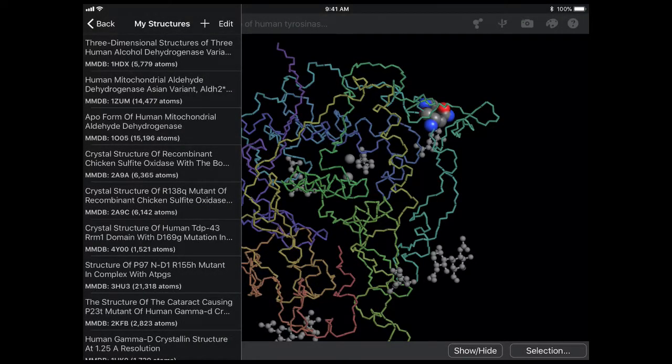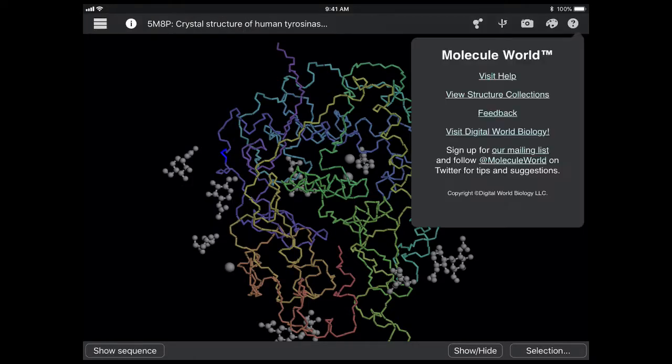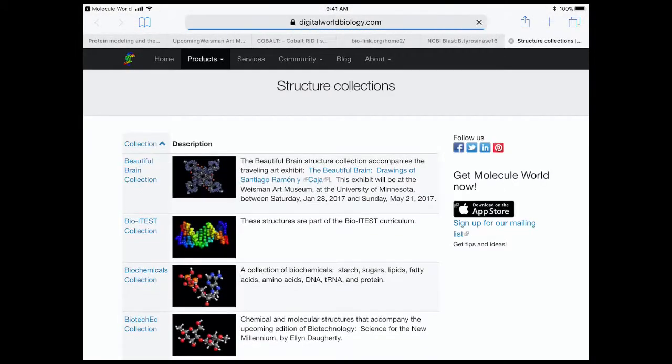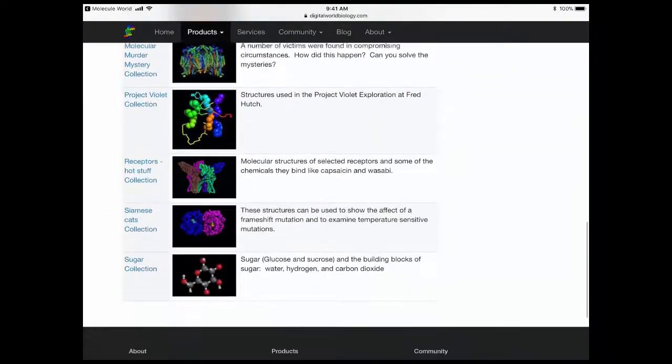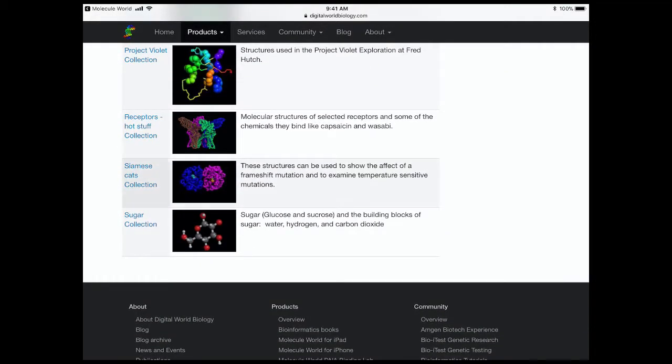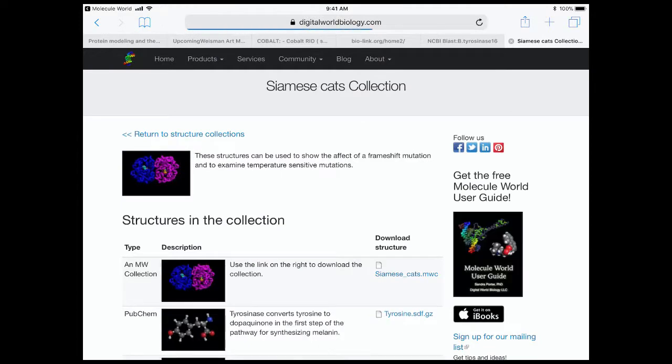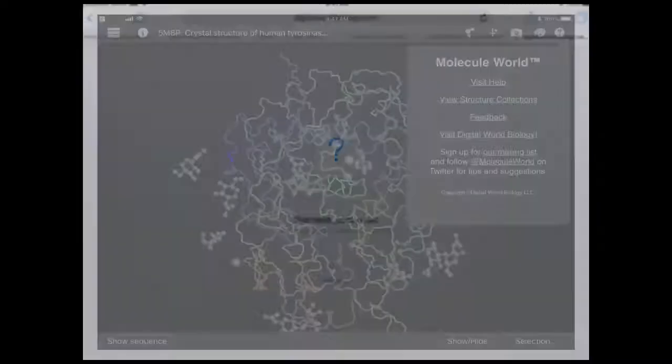Now we'll start working with Molecule World. First, we'll go to the Digital World Biology Structure Collections. From there, we'll go to the Siamese Cat Collection. We'll download the collection and open it in Molecule World.